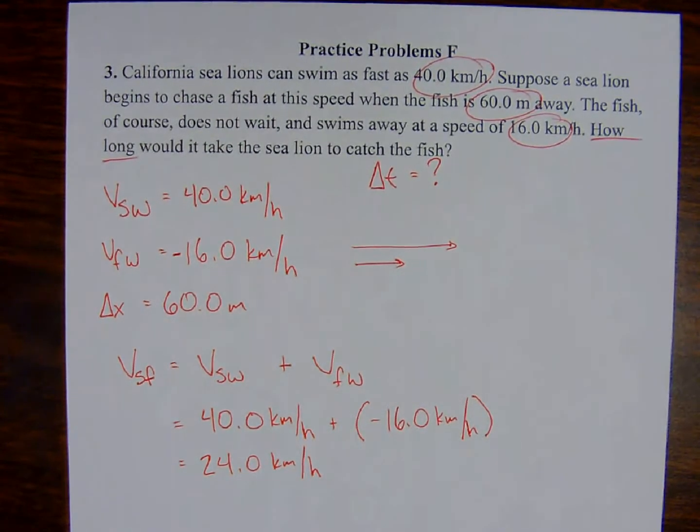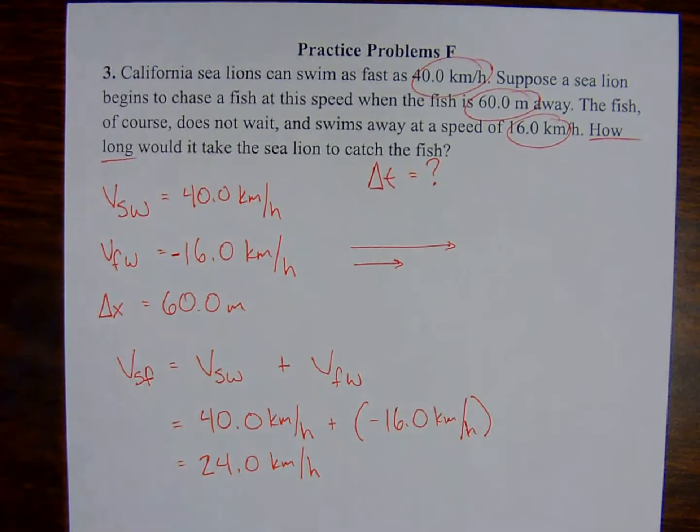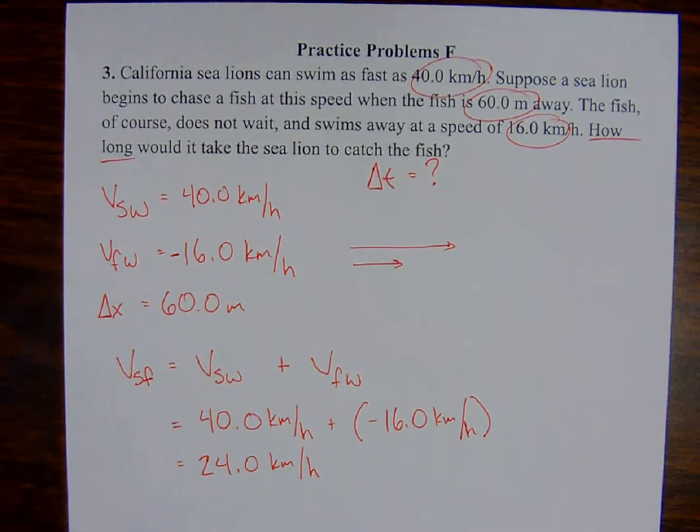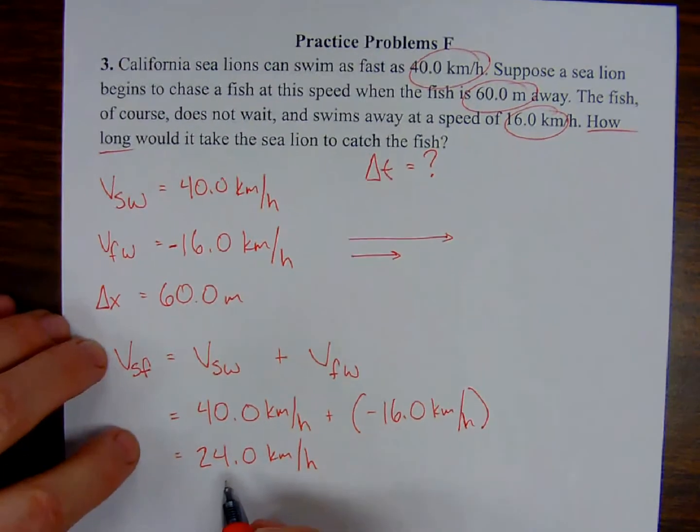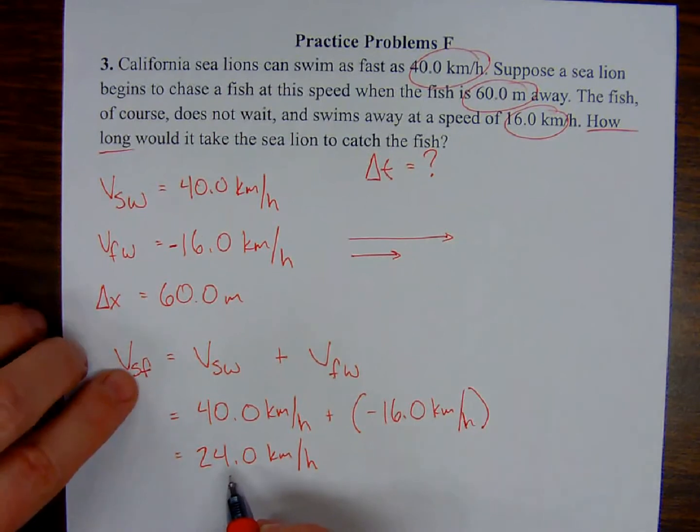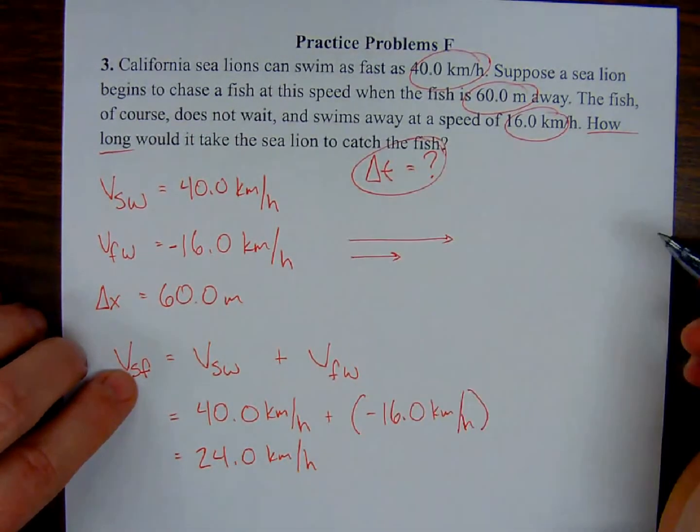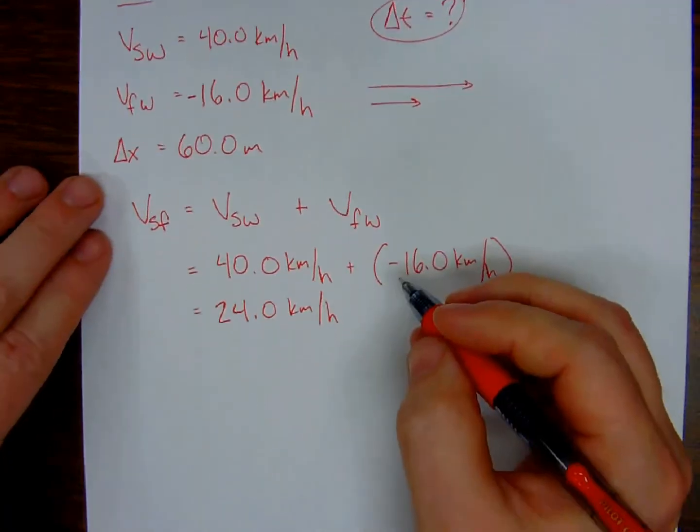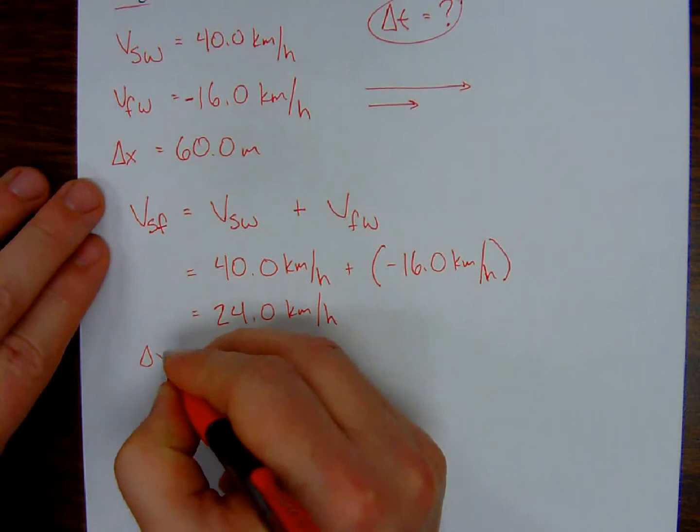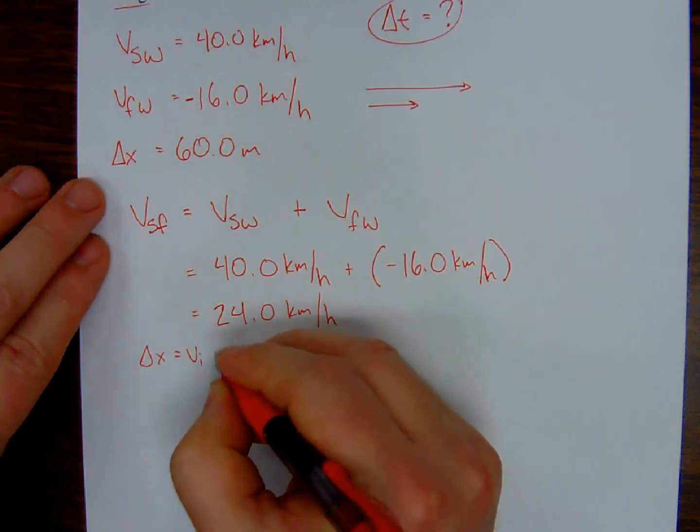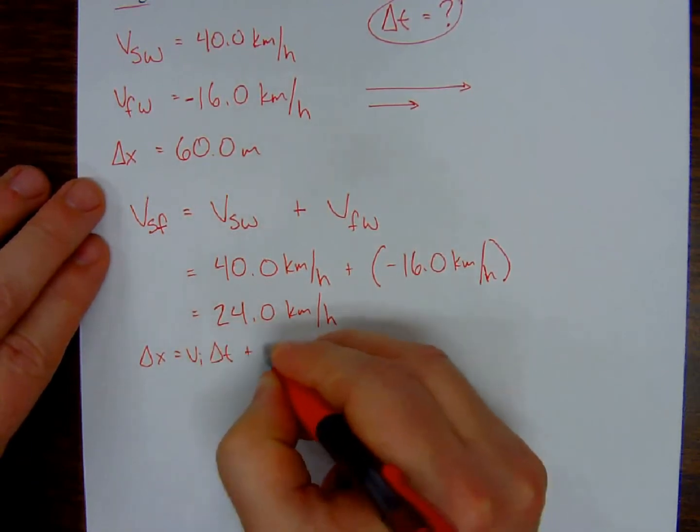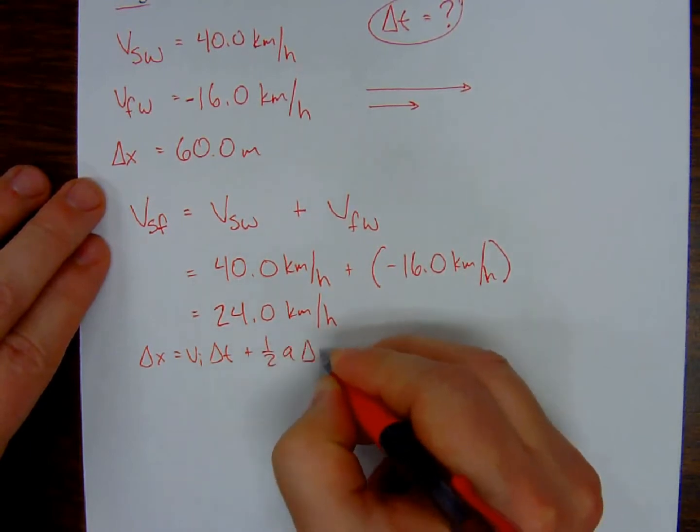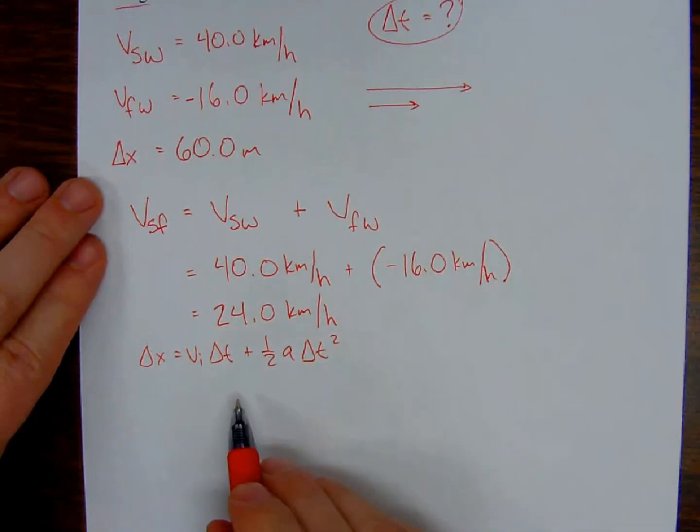But we're not being asked to solve for the velocity of the sea lion with regard to the fish. We're being asked to solve for time. We know that we have our kinematic equation. This is a constant velocity. Both of these creatures are traveling as fast as they can. So there's no change in velocity. And if there's no change in velocity, the numerical value for acceleration is zero. So I can get rid of that entire part of the equation.